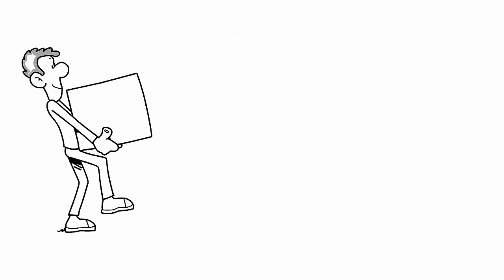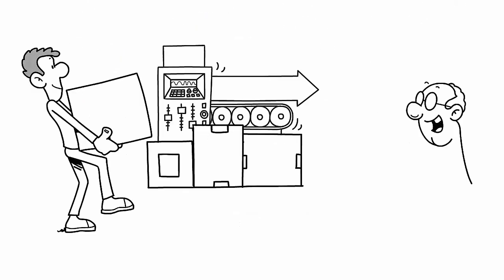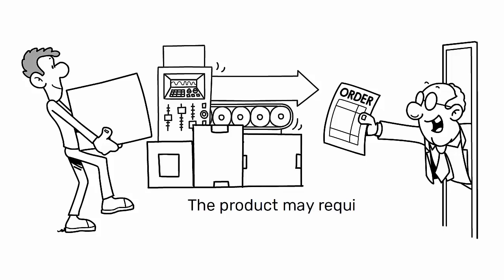This is because the production process only begins when the order is placed and the product may require unique components or configurations.